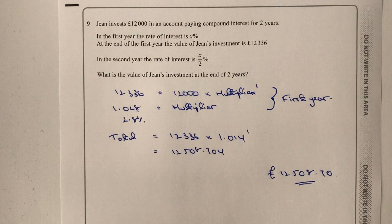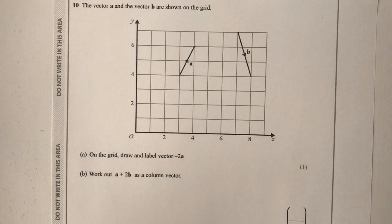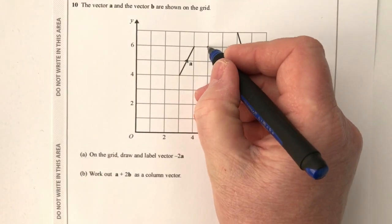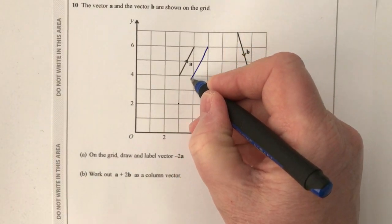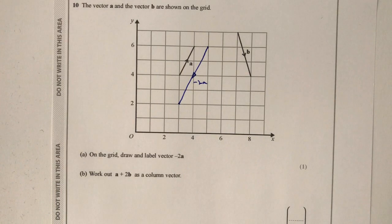Question ten is a vectors on a grid question. Part a asks us to draw and label vector minus 2a. This vector is going to go in the opposite direction, be twice the size, and be parallel to vector a. I can draw some dots in and join them — that gives minus 2a. Part b asks us to work out a plus 2b as a column vector.